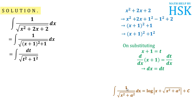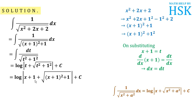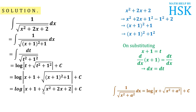Using the formula that integration of 1 upon under root of x squared plus a squared equals log of x plus under root of x squared plus a squared plus c, this equals log of t plus under root of t squared plus 1 squared plus c. Substituting t equal to x plus 1, this becomes log of (x plus 1) plus under root of (x plus 1) whole squared plus 1. Since (x plus 1) whole squared plus 1 equals x squared plus 2x plus 2, the final answer is log of (x plus 1) plus under root of x squared plus 2x plus 2 plus c.